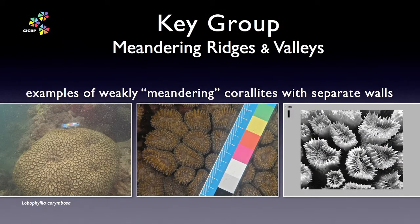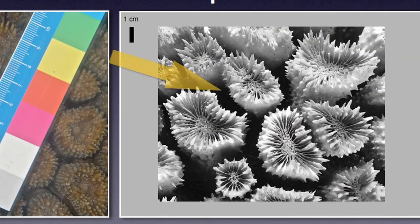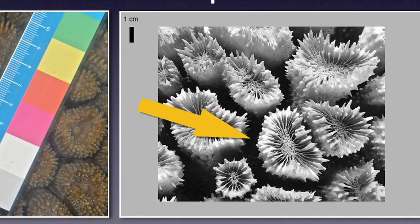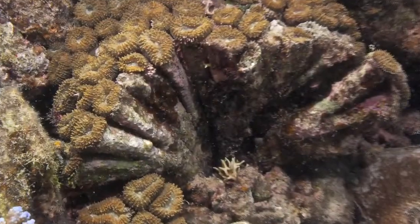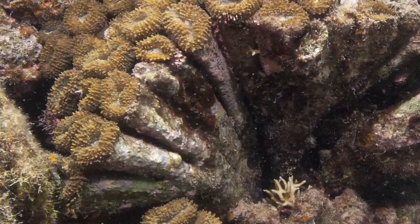Here we have a coral with weakly meandering coralites. Note the short valleys and separated coralite walls. In this coral, Lobophilia, these coralites are actually long stalk tubes gathered very close together.